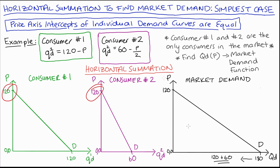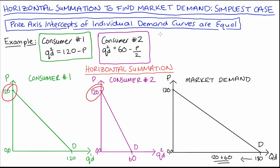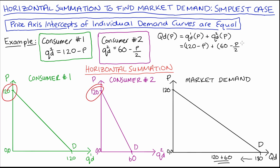Let's find our demand function algebraically. Our market demand function QD of P equals consumer number one's demand function QD1 of P, plus consumer number two's demand function QD2 of P. That's equal to 120 minus P, plus 60 minus P over two. Adding the two constants gives us 180, and then we have minus P minus P over two. Rewriting minus P as minus 2P over two, we can combine those last two terms. So we get 180 minus 3P over two.